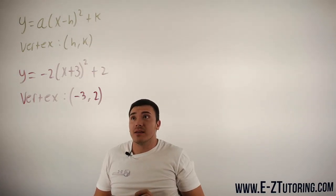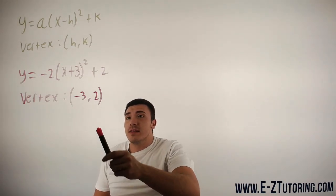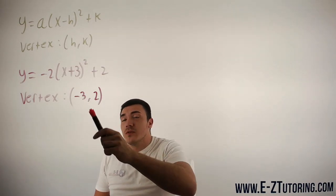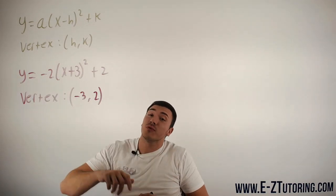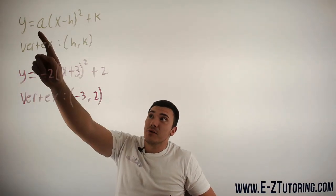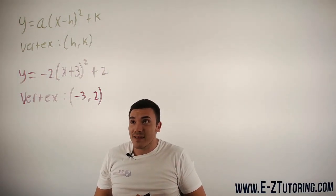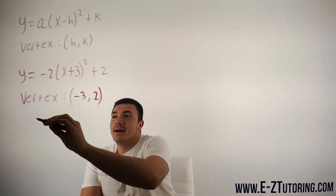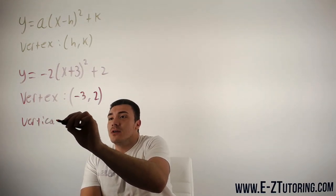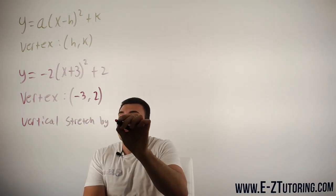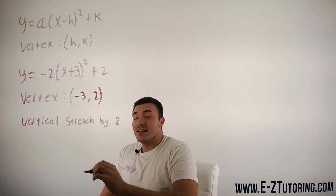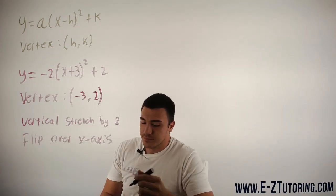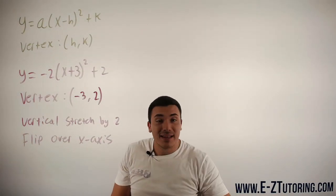Now there are two other things that are happening to this parabola. Not only did the vertex move from the parent function y equals x squared to negative 3 comma 2, but it also will have a vertical stretch by 2. This a value can be vertical stretches or compressions. This has to do with graph transformations. We will have a vertical stretch by 2, and this negative means that it will flip over the x-axis.